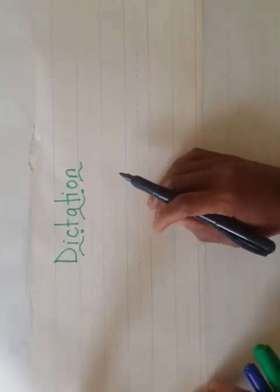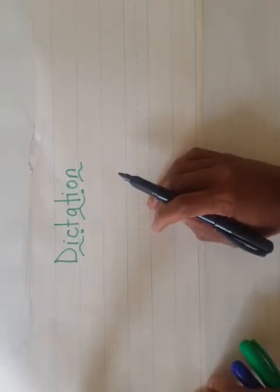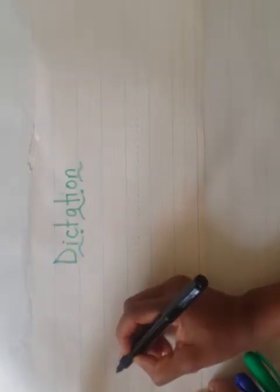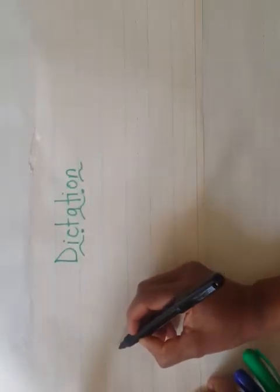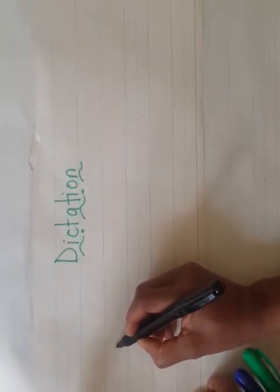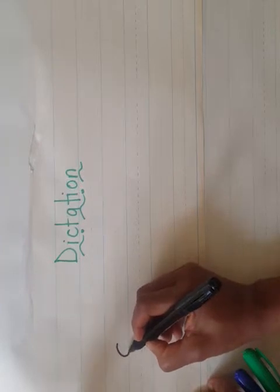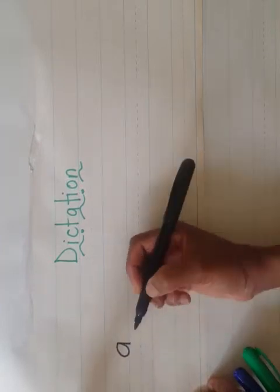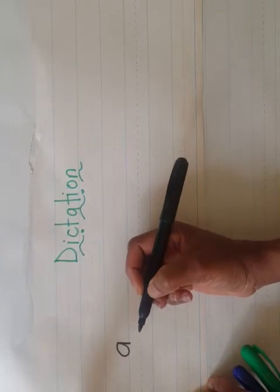First, I'm going to start with the letter that makes the 'a' sound. Write the letter that makes the 'a' sound. Great — so this is how you write it: start at the top, go around, go back up, come straight down. It makes the sound 'ah'.